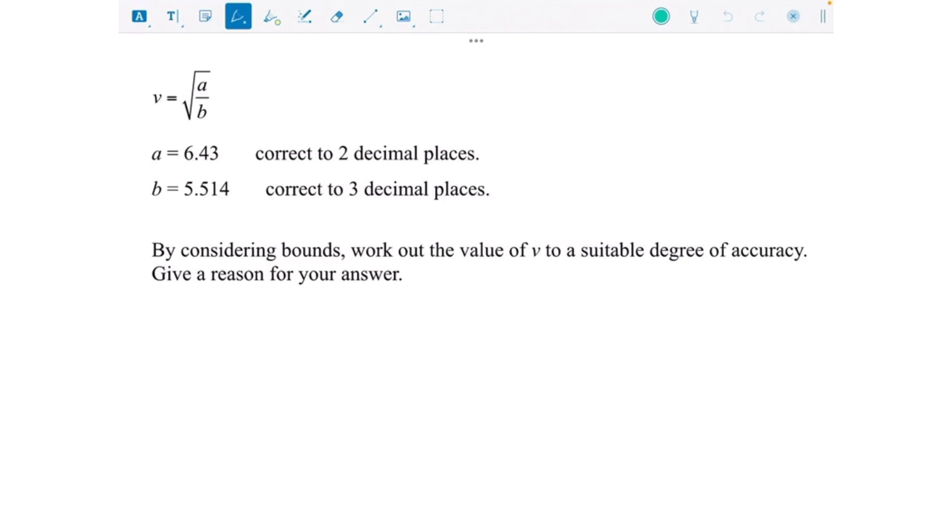Here we can see that v equals the square root of a divided by b. We know that a is 6.43 correct to two decimal places. Someone has rounded that to two decimal places, which is the same as rounding it to the nearest 0.01.